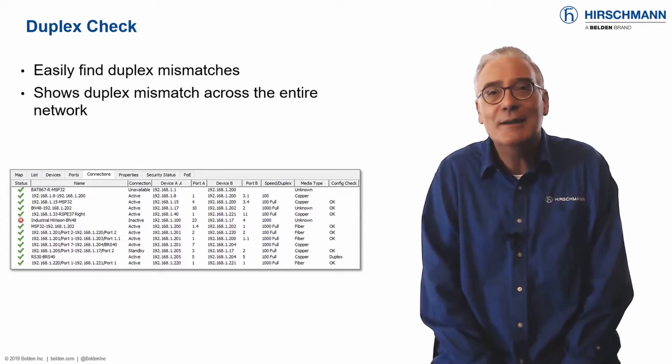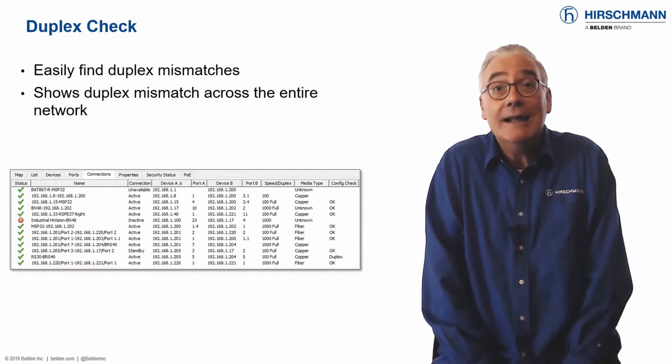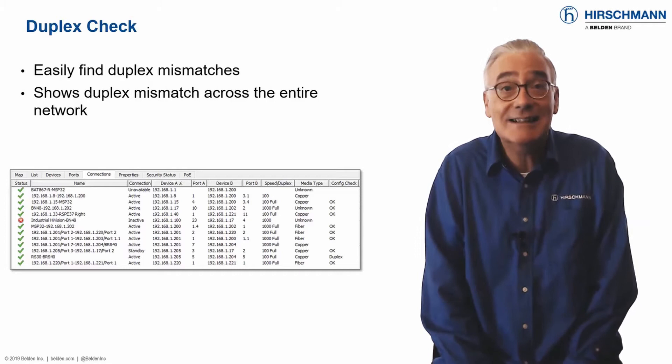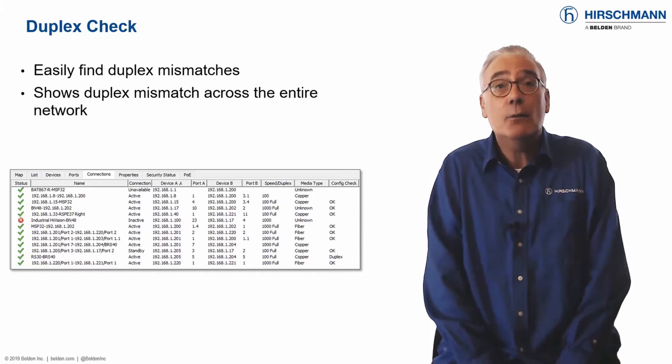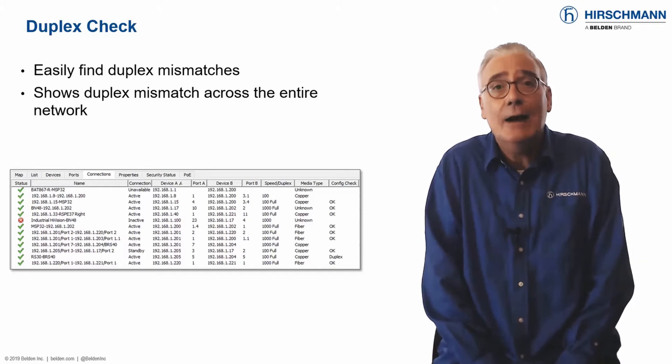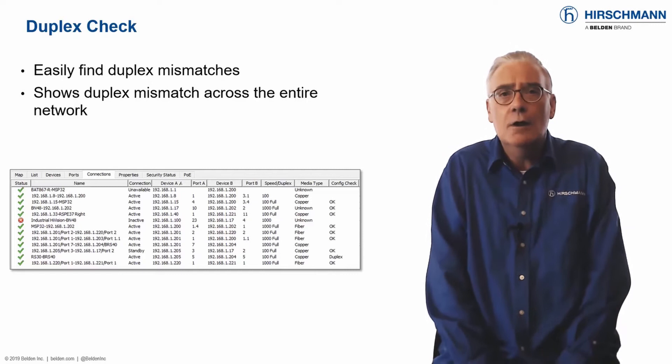Duplex mismatches are a thing of the past, right? Nobody manually configures duplex anymore, do they? In IT networks, probably not. But in OT networks things are not so clear. Some legacy end devices have hard-coded duplex and do not support auto-negotiation. Other networks were manually configured in the past, and this is only now causing problems as the bandwidth utilization increases.